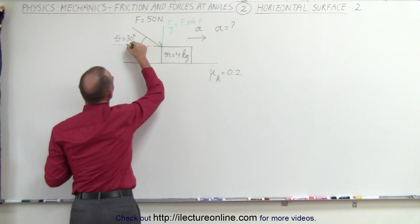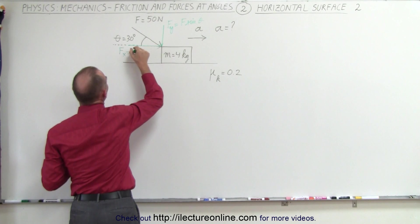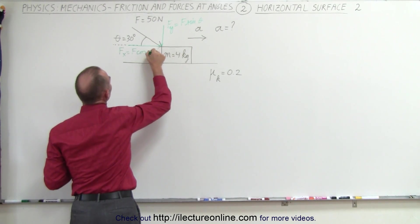And here we have the horizontal component which would be f in the x direction, which is equal to f times the cosine of theta.